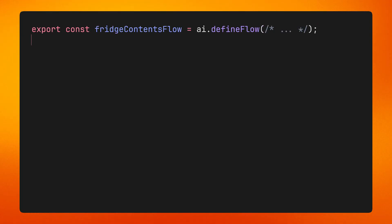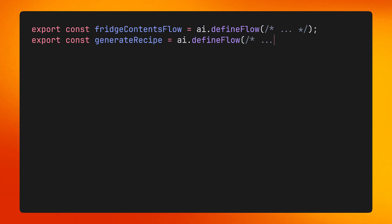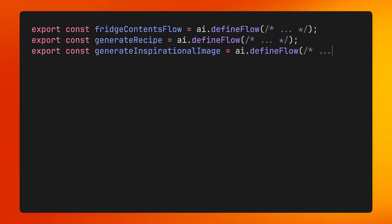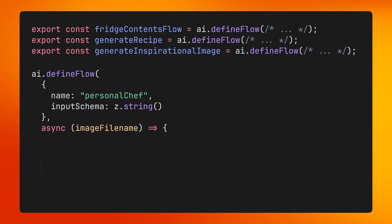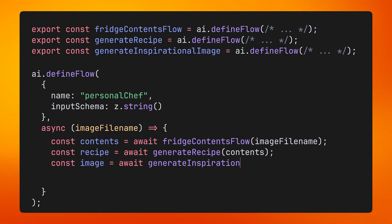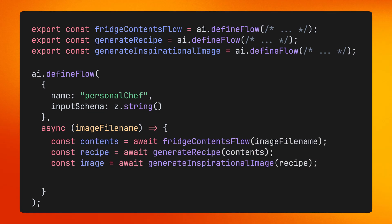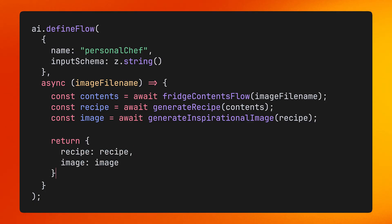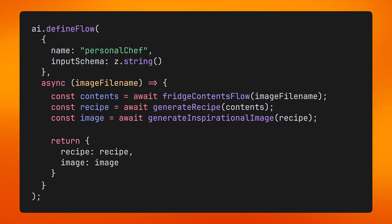For example, imagine building a recipe recommendation app based on uploaded images. This could be decomposed into a pipeline of GENKIT flows: one flow to analyze image ingredients, another to generate a recipe based on the analysis, and a third to create a visual representation of the completed recipe. Once we've defined these individual flows, we can combine them into a new flow that calls them sequentially, passing data between them and ultimately returning a result object that your app can use.